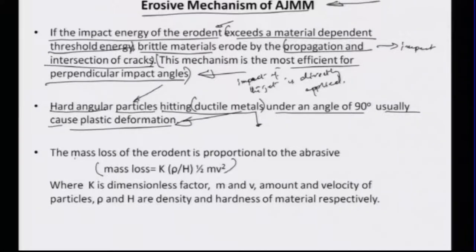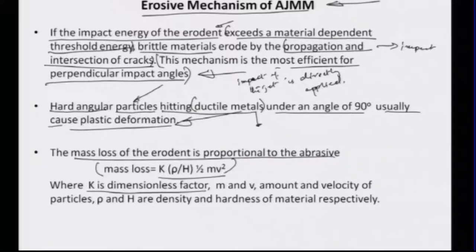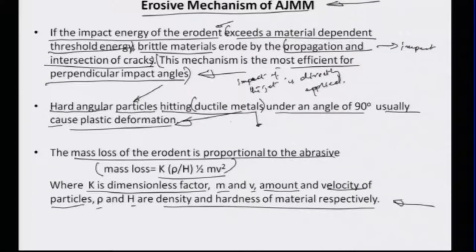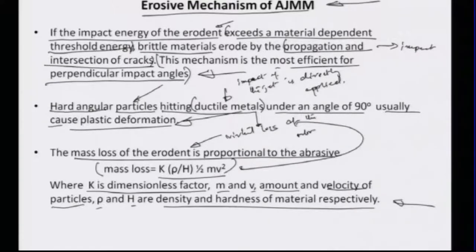Because the mask is made of ductile metals, plastic deformation by hard angular abrasive particles is almost certain. There is a mass loss factor defined by the term k·ρ/h · ½mv², where k is a dimensionless factor, m and v are the mass and velocity of the particles, and ρ and h are the density and hardness of the material respectively. In micro machining using a mask with ductile metals, this virtual loss — calculated by this method — of the abrasive in terms of damage or deformation to grains emanating from the nozzle must be taken into account at the micro scale.